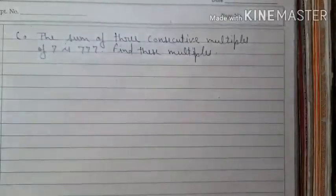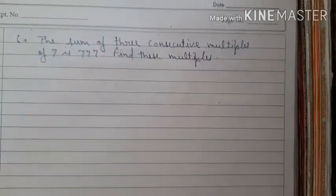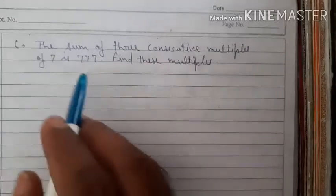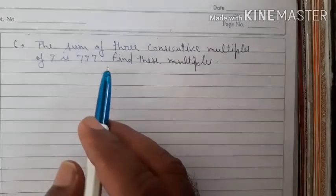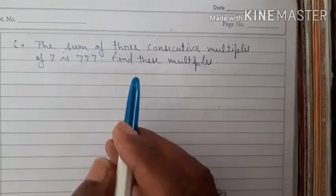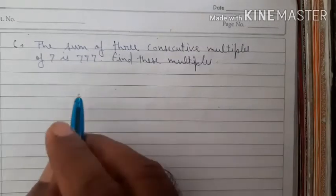Now let us see question number 6: The sum of 3 consecutive multiples of 7 is 777. Find these multiples.